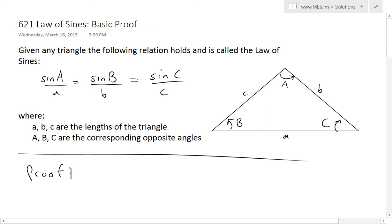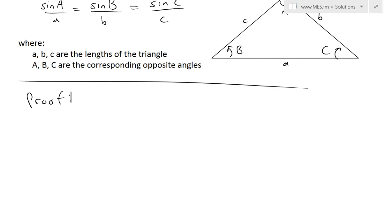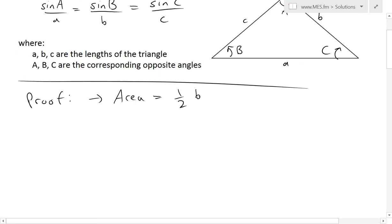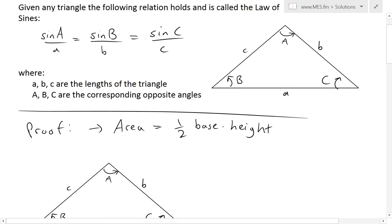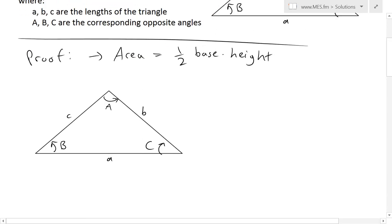Now for the proof, we will utilize the fact that the area of a triangle equals one half times base times height. You can see a proof of this in the video link below in my earlier video. Basically, we can write the area in different ways depending on which base we choose.